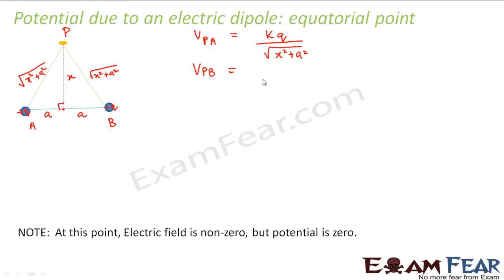Similarly, potential at P due to B will be equal to k into minus q divided by the distance, that is again root over x square plus a square.